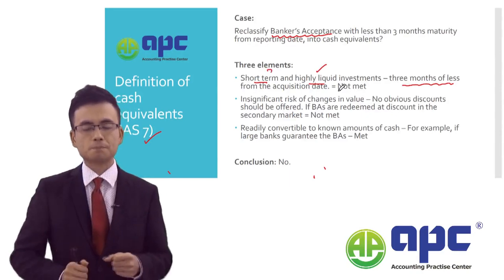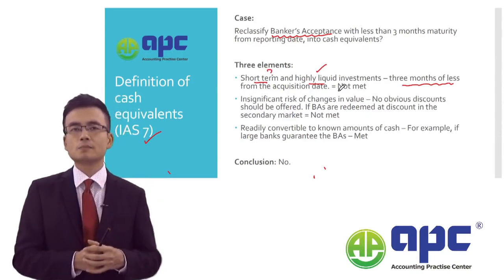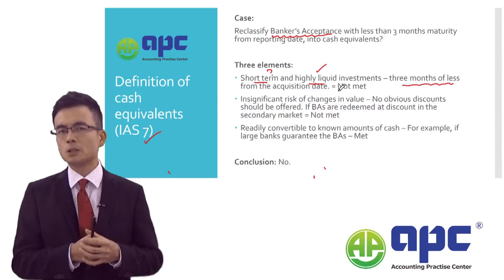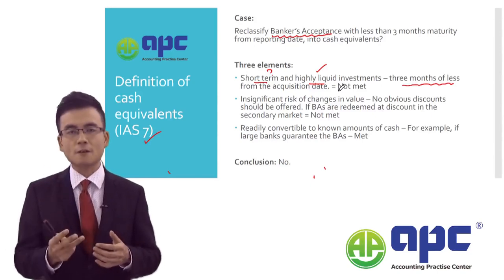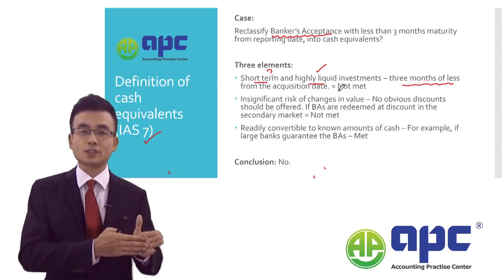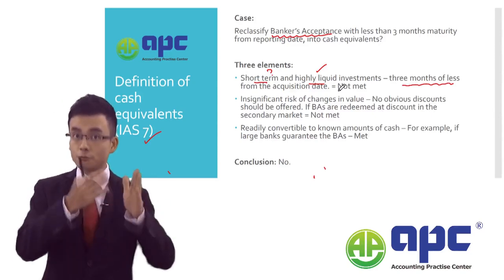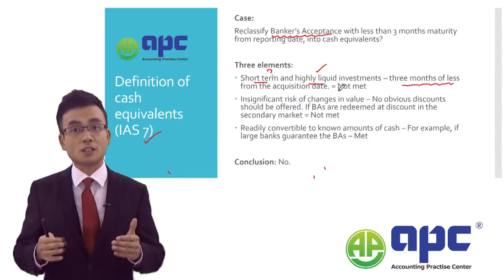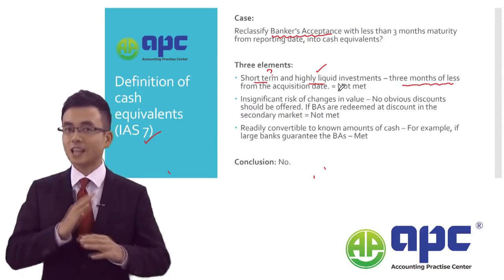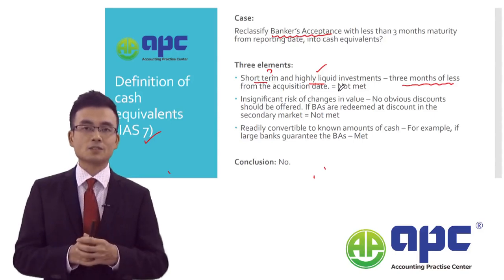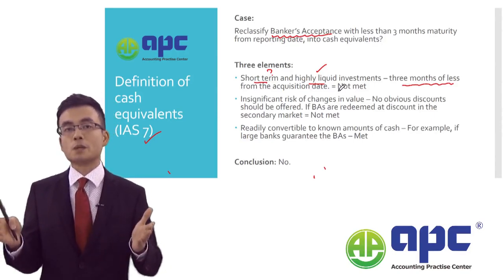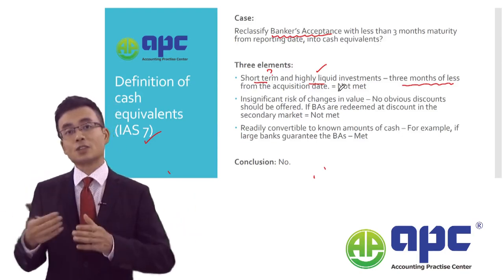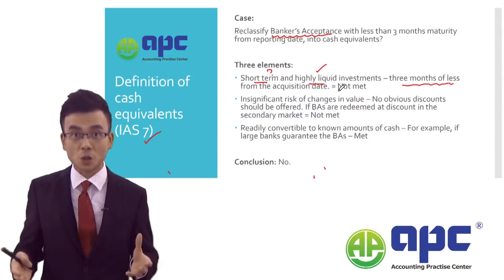But is it short-term? In this case, the finance director's banker's acceptance had a maturity date of three months or less, but measured not from the acquisition date — not from the date of transaction — but from the reporting date, i.e. from year-end. If that's the case, then this criterion is not met, and therefore you cannot reclassify the banker's acceptance with more than three months' maturity from the acquisition date from other receivables into cash or cash equivalents.